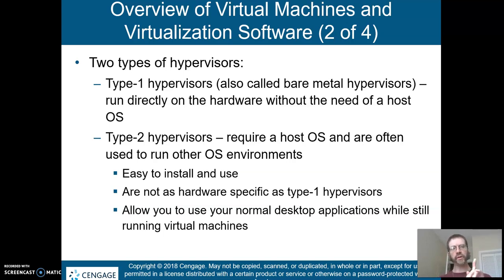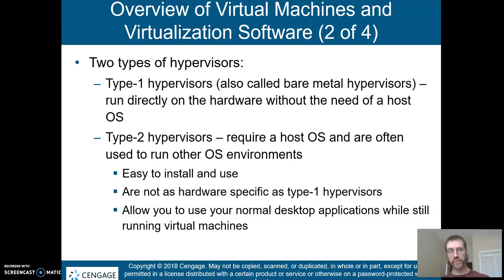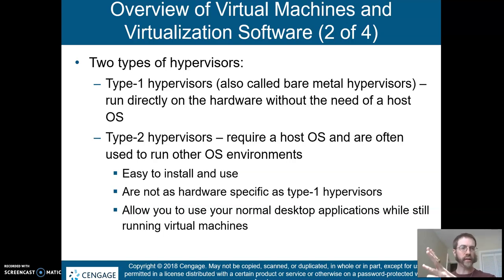Hyper-V, depending on how you deploy it, can be both a type 2 and a type 1. A type 2 needs a host OS and it runs on top of it. A type 2 doesn't have the same capabilities — it allows you to do other things with your desktop while you're running a VM. With the type 1, that's all you can do. There usually isn't a GUI directly with vSphere — you actually have to get into the ESXi web client or the vSphere client just to get something that looks like a GUI. There is a physical console on that ESXi host, but we'll get to that.